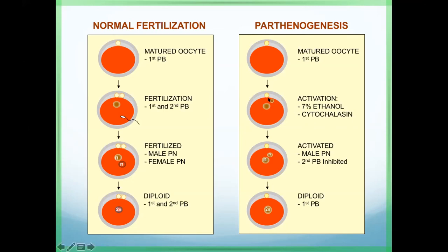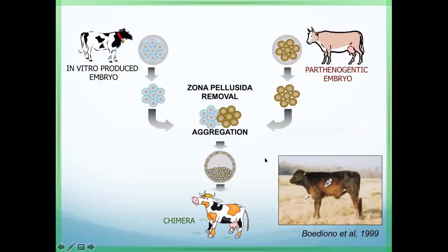For parthenogenesis, before the second polar body is extruded, I use cytochalasin B to avoid the extrusion of the second polar body, so we retain two chromosome sets and produce a diploid embryo. After culture we get a nice blastocyst. But when we try to transfer several times, we cannot get offspring, due to genomic imprinting. This is the mechanism behind the impossibility of getting parthenogenetic offspring.